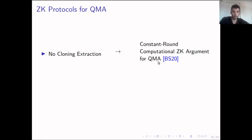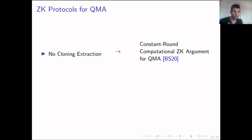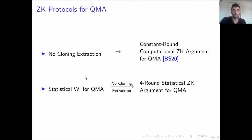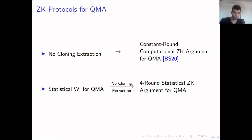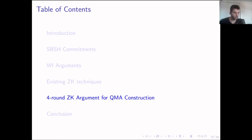Butaski and Shmeli used this no-cloning extraction technique combined with a classical zero-knowledge argument and the quantum sigma protocol to achieve constant-round computational zero-knowledge for QMA. What we do in our construction is use our statistical WI argument combined with the no-cloning extraction to get zero-knowledge for QMA in just four rounds, and as a bonus, we also achieve statistical zero-knowledge.